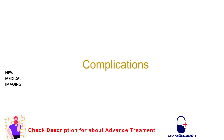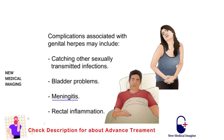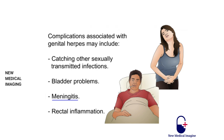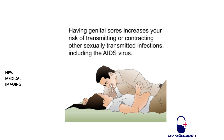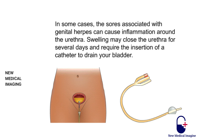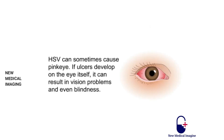Complications associated with genital herpes may include catching other sexually transmitted infections, bladder problems, meningitis, and rectal inflammation. Having genital sores increases your risk of transmitting or contracting other STIs, including the AIDS virus. In some cases, sores can cause inflammation around the urethra, and swelling may close the urethra for several days, requiring a catheter to drain the bladder. HSV can sometimes cause pink eye, and if ulcers develop on the eye itself, it can result in vision problems and even blindness.